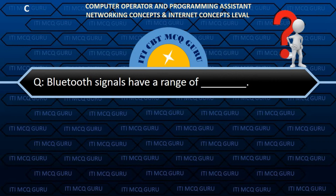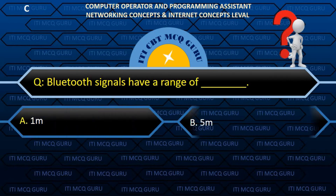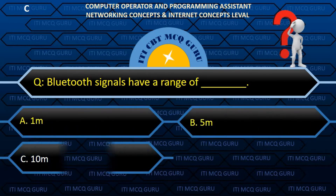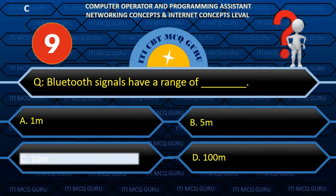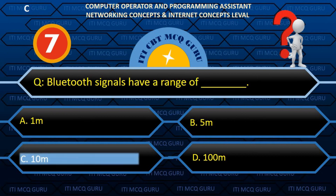Bluetooth signals have a range of: C. 10 meters.